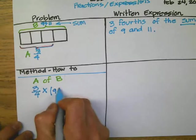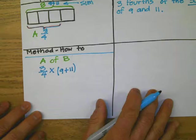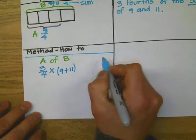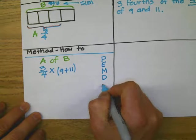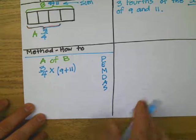Step number one, PEMDAS. PEMDAS is just an acronym, an association that helps us know that we always solve parentheses first.